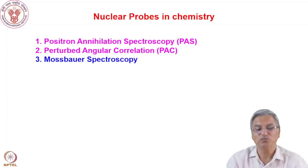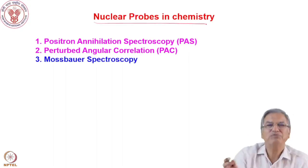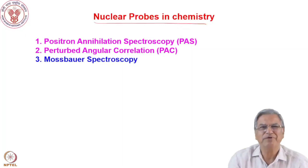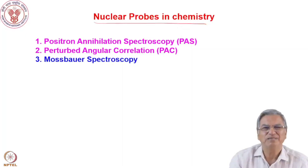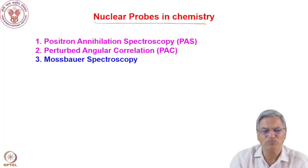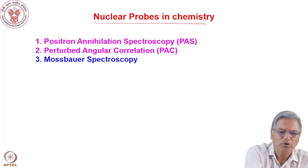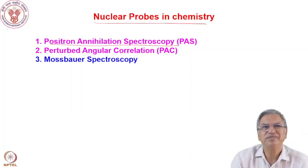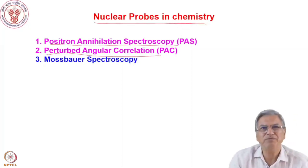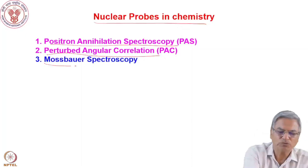Let us see what these nuclear probes are. In chemistry, we do not have well-defined boundaries anymore — there is a lot of multidisciplinary research at the boundary of physics and chemistry. When I say nuclear probes, they can be applied to physical chemistry and chemical physics. There are three techniques in the category of nuclear probes: positron annihilation spectroscopy, perturbed angular correlation spectroscopy (PAC), and Mössbauer spectroscopy.